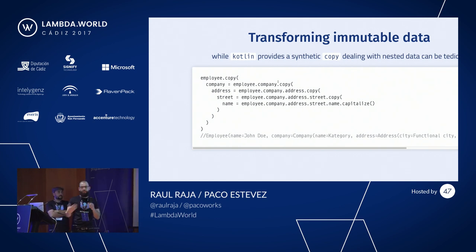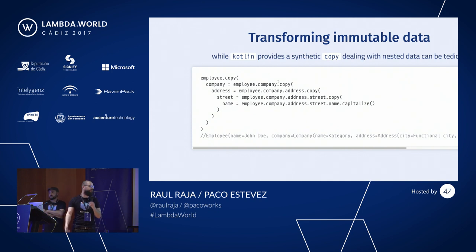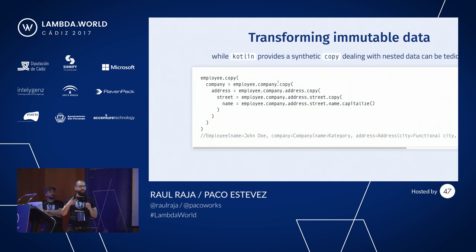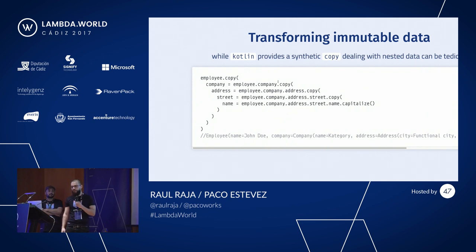Kotlin offers a copy method. Basically, just like in Scala, it copies the structure and allows you to update the value. But for nested values, it is already extremely tedious. It doesn't read well, it is extremely tedious to read, and it is extremely tedious to write.